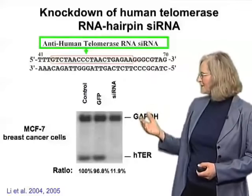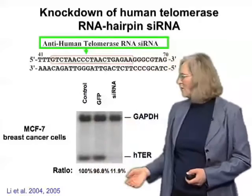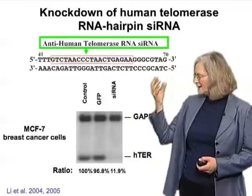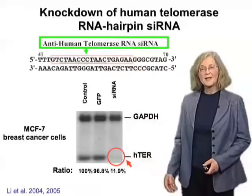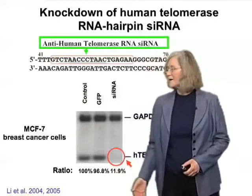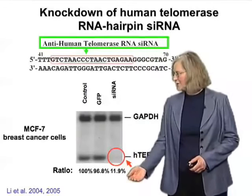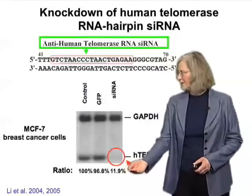When this experiment was done — here's a control showing a reference amount of telomerase RNA — one found that introducing such a short interfering RNA construct could quite efficiently knock down the telomerase RNA in human cancer cells grown in culture, for example breast cancer cells, knocking it down to about 10 to 12% of the original level seen in the controls.